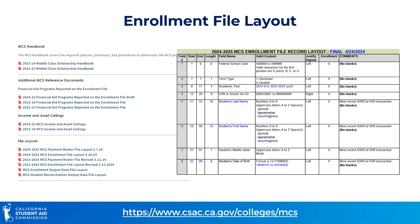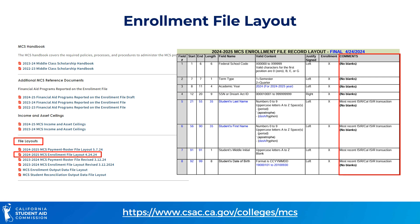For schools opting to upload enrollment data in batches, they should utilize the enrollment file layout to format their data file. To access the most recent enrollment file layout, use the URL at the bottom of the slide. Scroll down to File Layouts to find the most recent enrollment file layout. Here you can see which fields should be formatted with which data — the Comments column will tell you more information about that particular field. Any items in blue font indicate a change since the last layout.